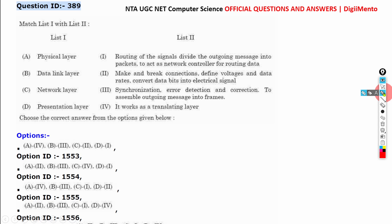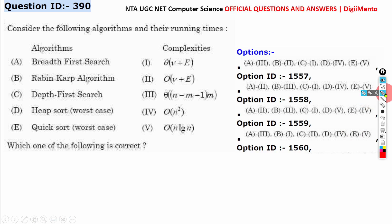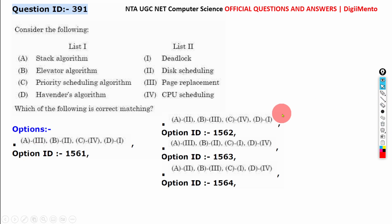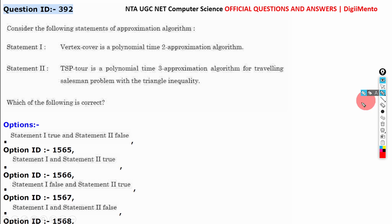Question 389, the correct answer is D. Question 390, the correct answer is C. Question 391, the correct answer is A. Question 392, the correct answer is A.